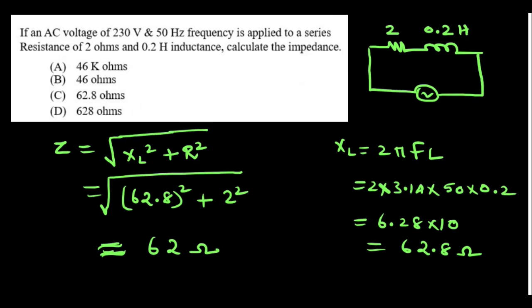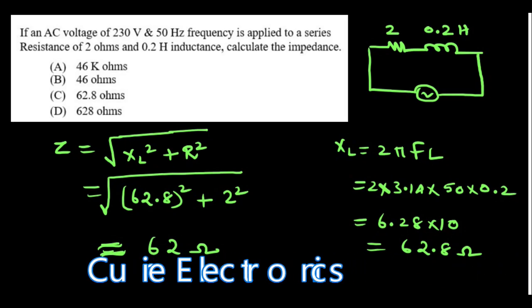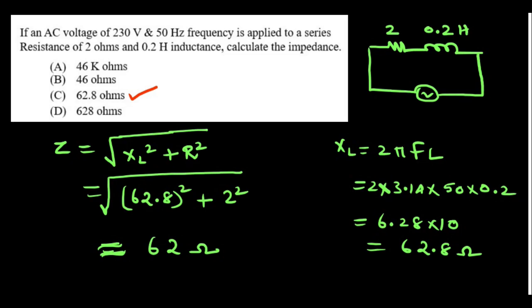An AC voltage of 230V and 50Hz is applied to a series circuit of 2 ohm resistance and 0.2 Henry inductance. Calculate the impedance. First find XL, which comes to 62.8. Then the impedance equals the square root of (62.8² + 2²). Since 2² is negligible, the answer is approximately 62 ohms. Option C is the right answer.